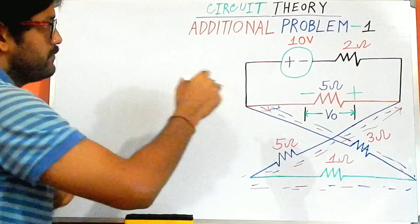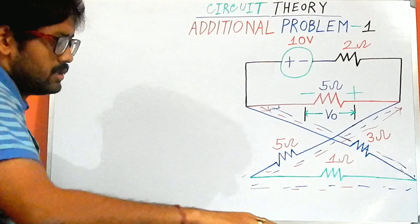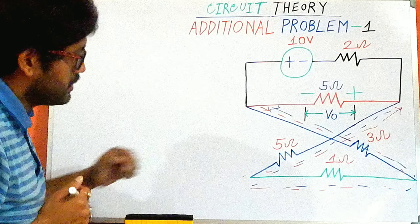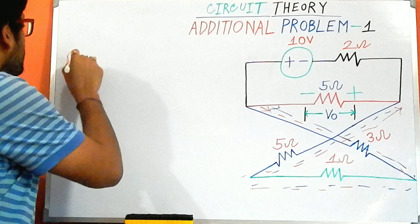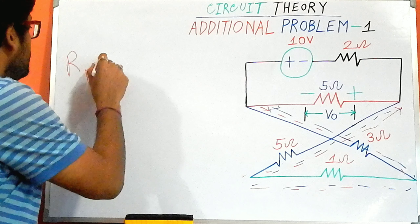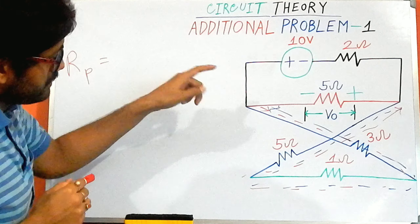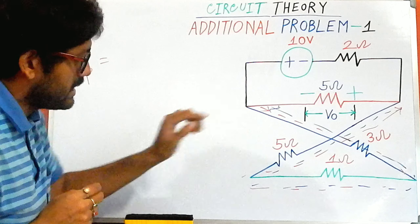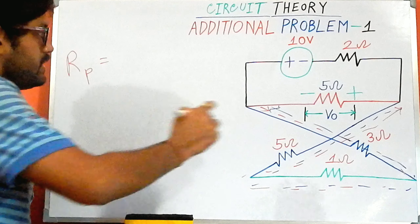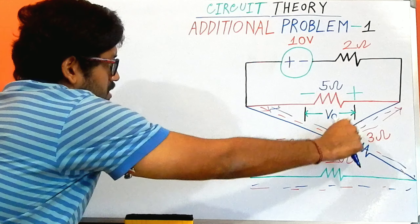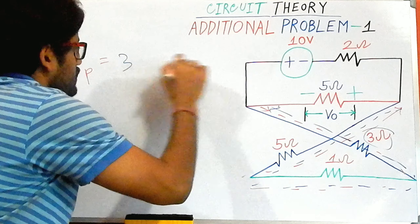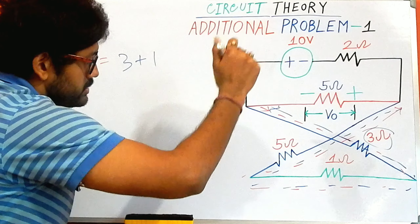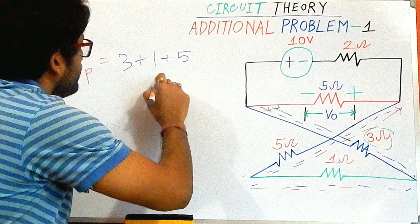If I consider the total path, what is the total resistance? I will write it here. The R parallel — if I follow the red line path, what is the total resistance across this line? It is very easy: across the red line, first comes 3 ohm, then 1 ohm.